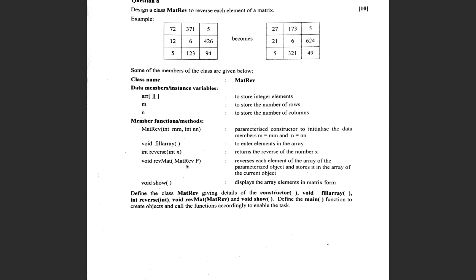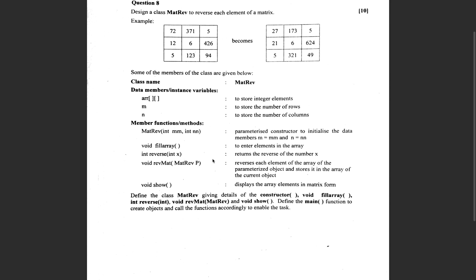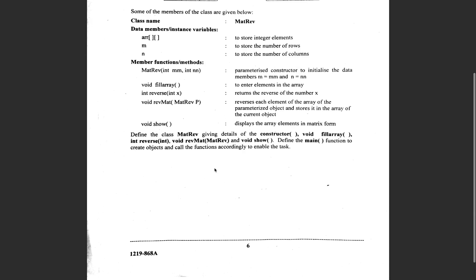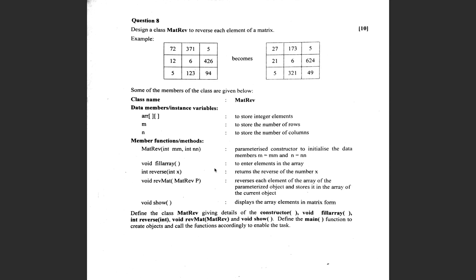So void revMat takes a MatRev object — this method is called on one MatRev object and another MatRev is passed as parameter p. It reverses each element of the array of the parameterized object p and stores it in the array of the calling object. So whatever is in p is reversed and stored in the calling object. In questions like these, give yourself time to analyze and think how you're going to approach this.